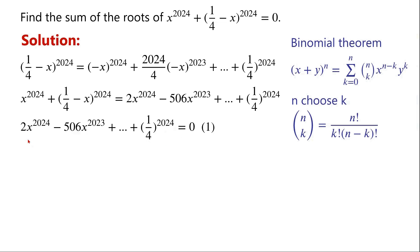Equation 1 is a polynomial equation of degree 2024, so equation 1 has exactly 2024 roots.